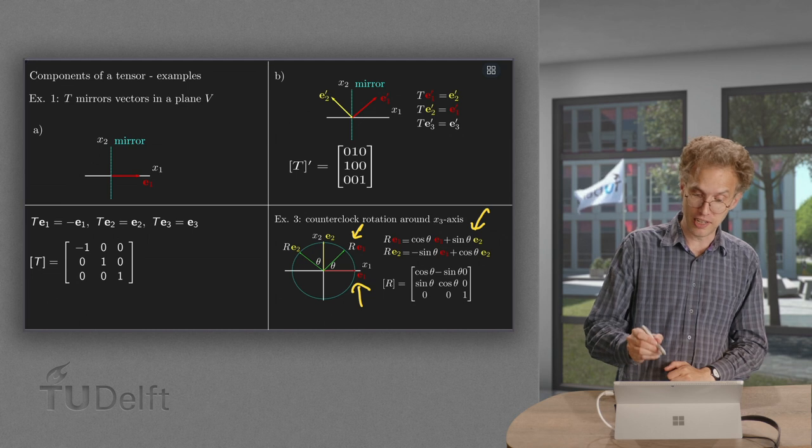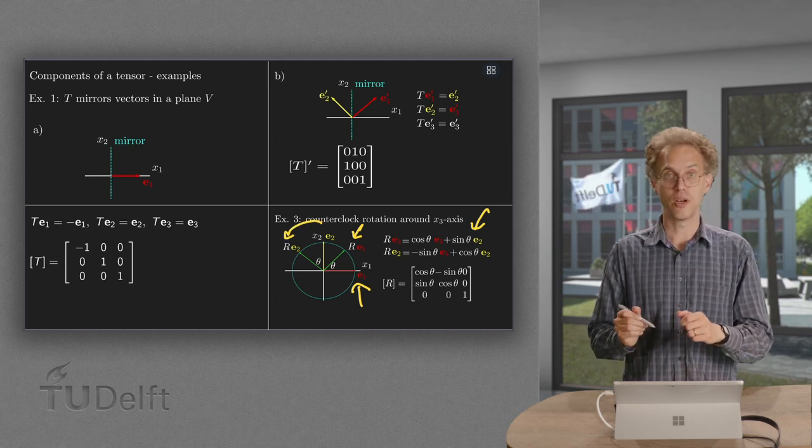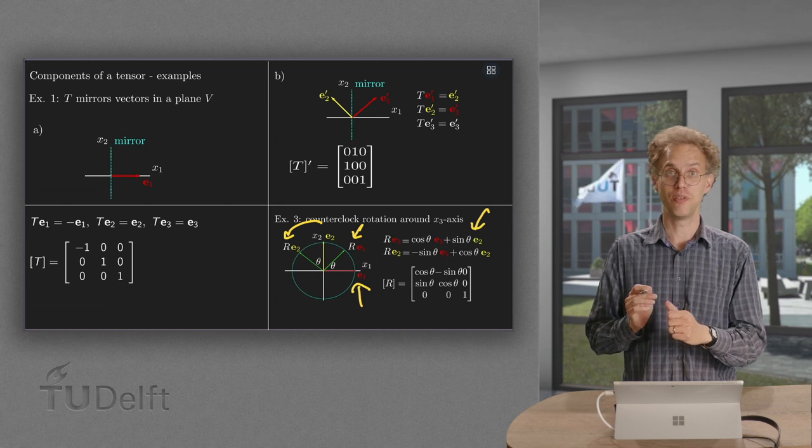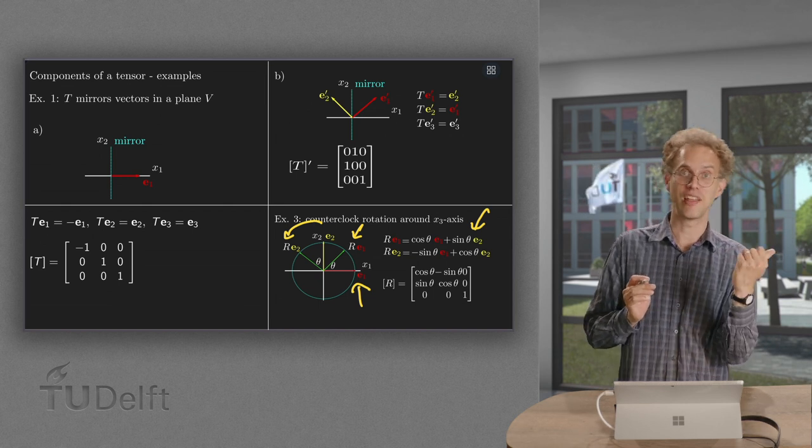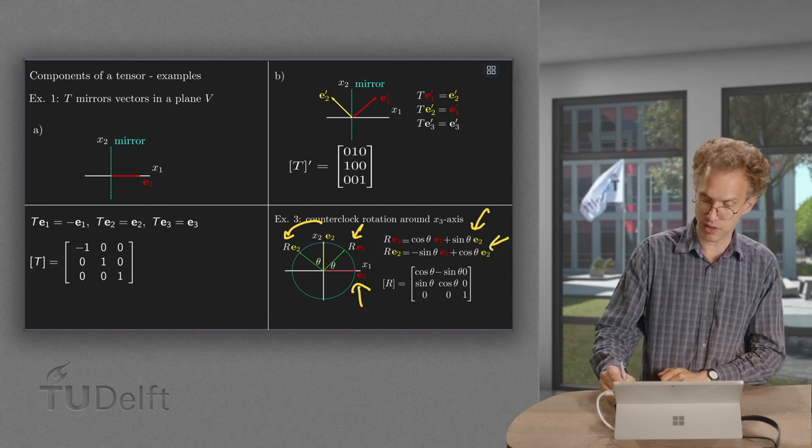So what is the image of e2? e2 rotated over here. In order to get the image of e2, we have to go minus sine theta in the e1 direction plus cosine theta in the e2 direction. So there we are.